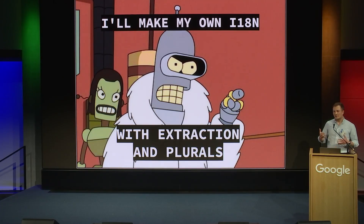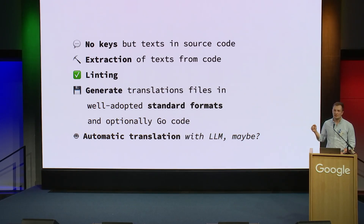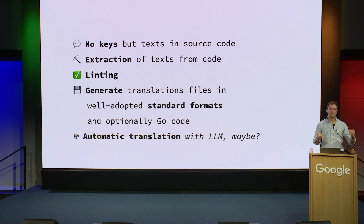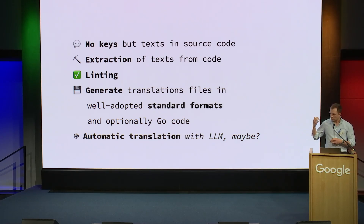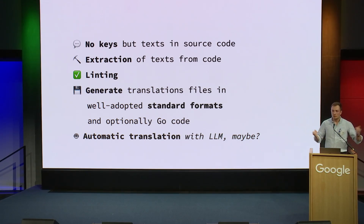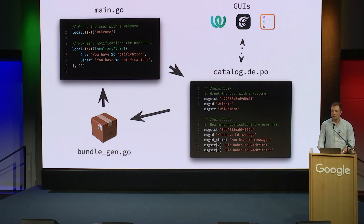So I decided, since there is such a mess, I need to contribute my own solution to it. I wanted no keys — I wanted texts in the source code so I can read the source code and make sense of it. I wanted to extract those texts like GNU gettext does, lint the code while extracting to check that everything is correct, generate translation files into well-adopted standard formats, optionally generate Go code for optimal performance, and also maybe automatically translate using LLMs. So I built this tool called Localize — it's on my GitHub — but I won't advertise it because, spoiler alert, it failed.